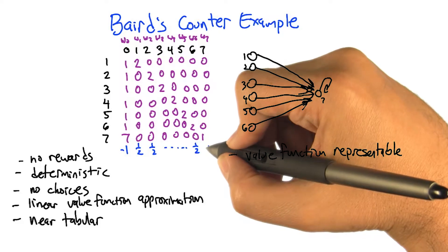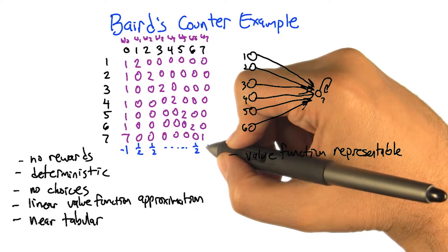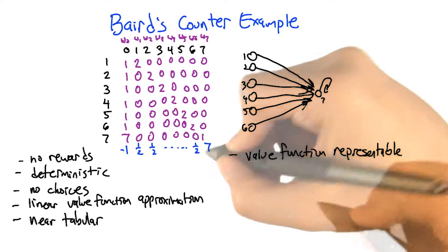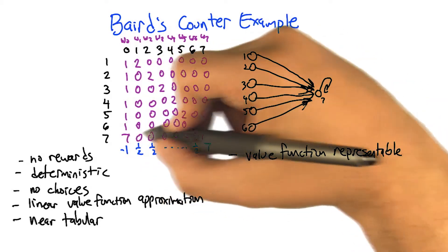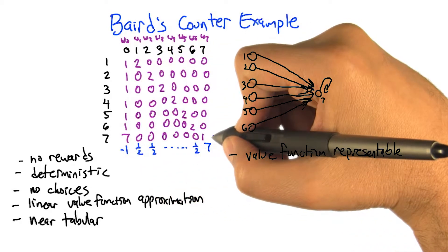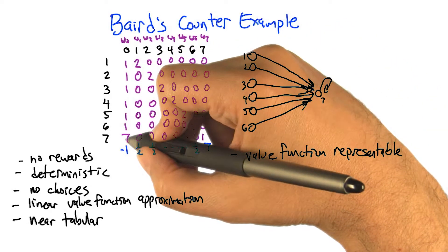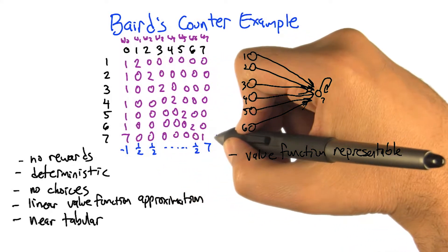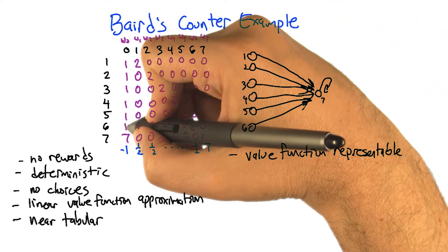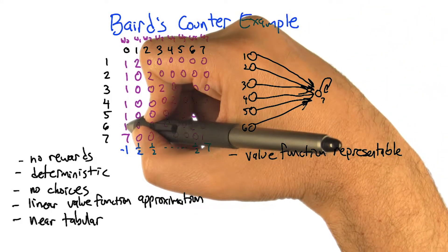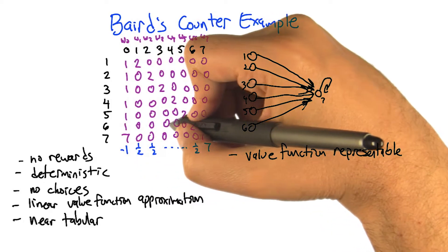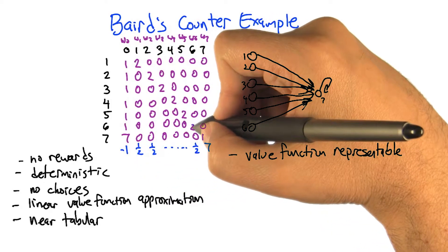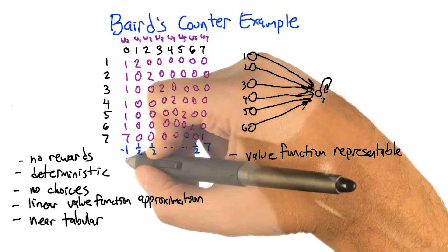And then state seven just needs it to be seven. So in particular, this weight vector times this feature vector is going to give us minus seven plus zero plus zero plus zero plus seven, so zero. For this other one, it's going to give us minus one plus zero plus zero plus zero plus zero plus zero plus zero plus zero plus one, which is zero.